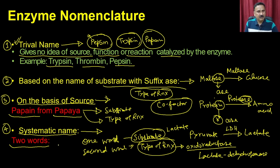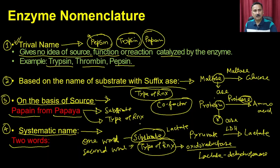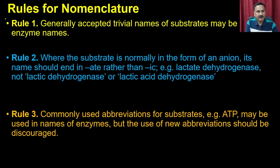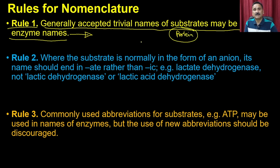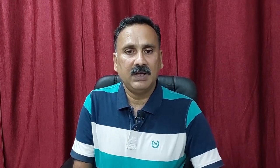This systematic approach also had issues, so people came up with a set of guidelines and rules. Rule 1: the generally accepted trivial name of the substrate may be used in the enzyme name. You should use the classical, standard name of that substrate — for example, 'protein' — and not some alternative name. It should be a standard name used in nomenclature.